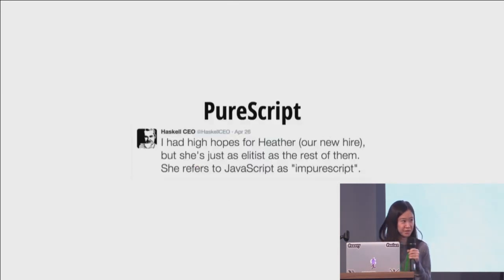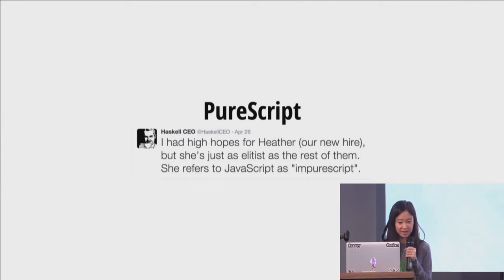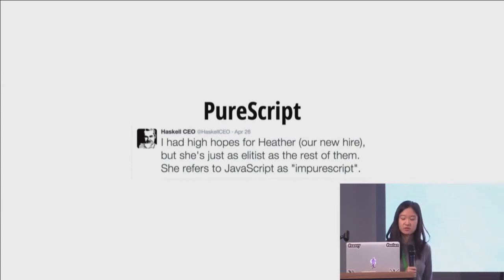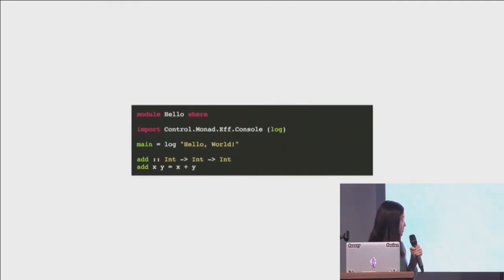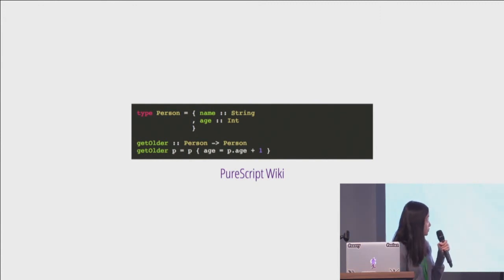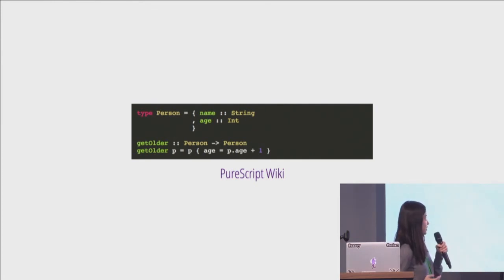Now, PureScript. PureScript is written in Haskell and is a strongly typed language that compiles to JavaScript as well. It has Haskell syntax. Using our previous person example, you take a person, copy everything else from the person, and only change the age — and this is how you write it in PureScript.